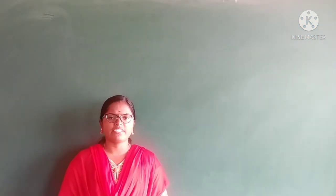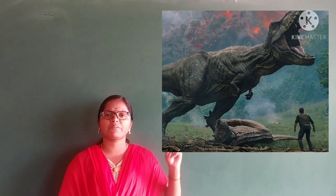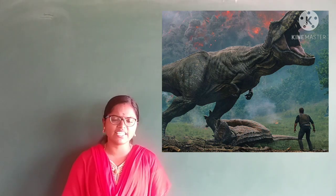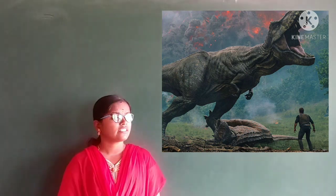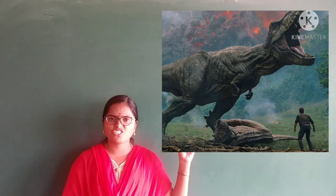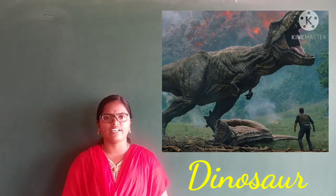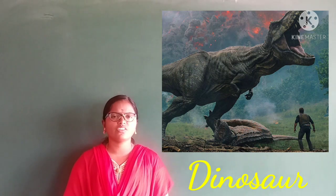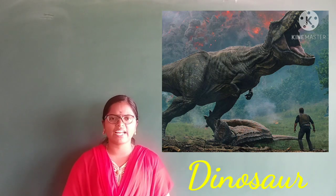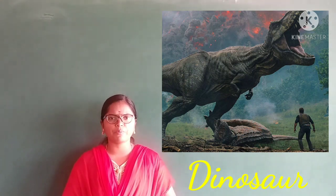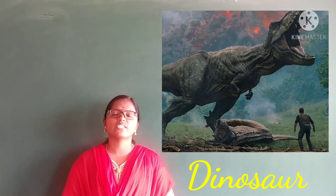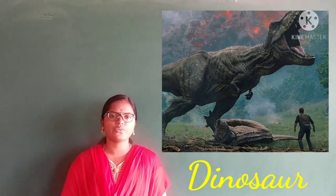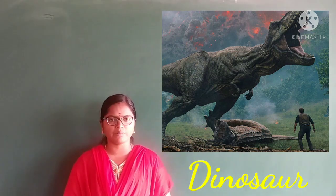Now you can see another picture. Which picture is this? This is a picture of a dinosaur. So you have already seen it in a poem. This is a picture of a dinosaur. Now we can't see that animal.